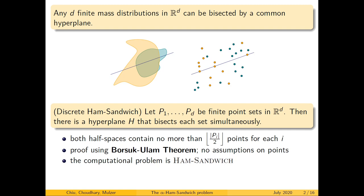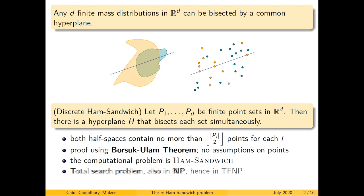The ham sandwich theorem has been proven using the Borsuk-Ulam theorem and there are no assumptions on the points. The computational problem associated with this would be to find this bisecting hyperplane. Since this hyperplane always exists, this is a total search problem. This is also in NP — in fact it belongs to the complexity class commonly called TFNP.